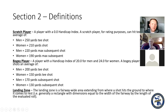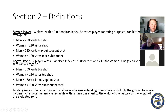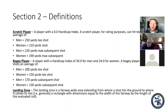When we're doing course rating, we're evaluating the golf course for a scratch player and a bogey player. A scratch player is someone with a 0.0 handicap index. They can hit their tee shot 250 yards for a male, 210 for a female. On the subsequent shot or second shot on a par five, they can hit it up to 220 for men and 190 for women as a scratch player.